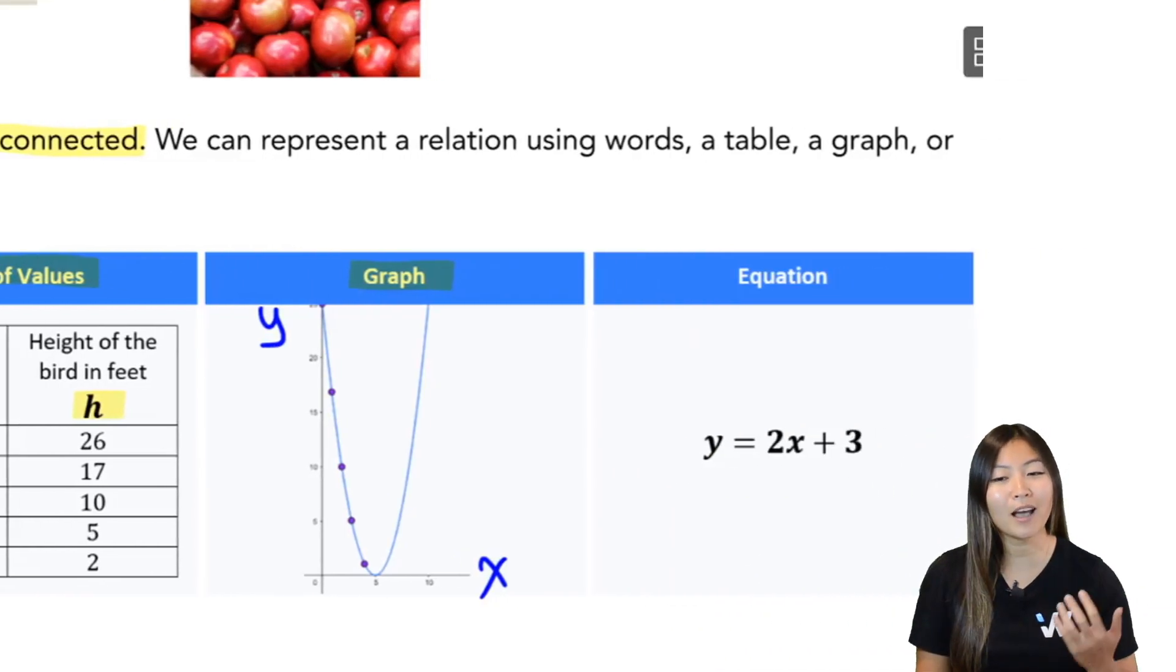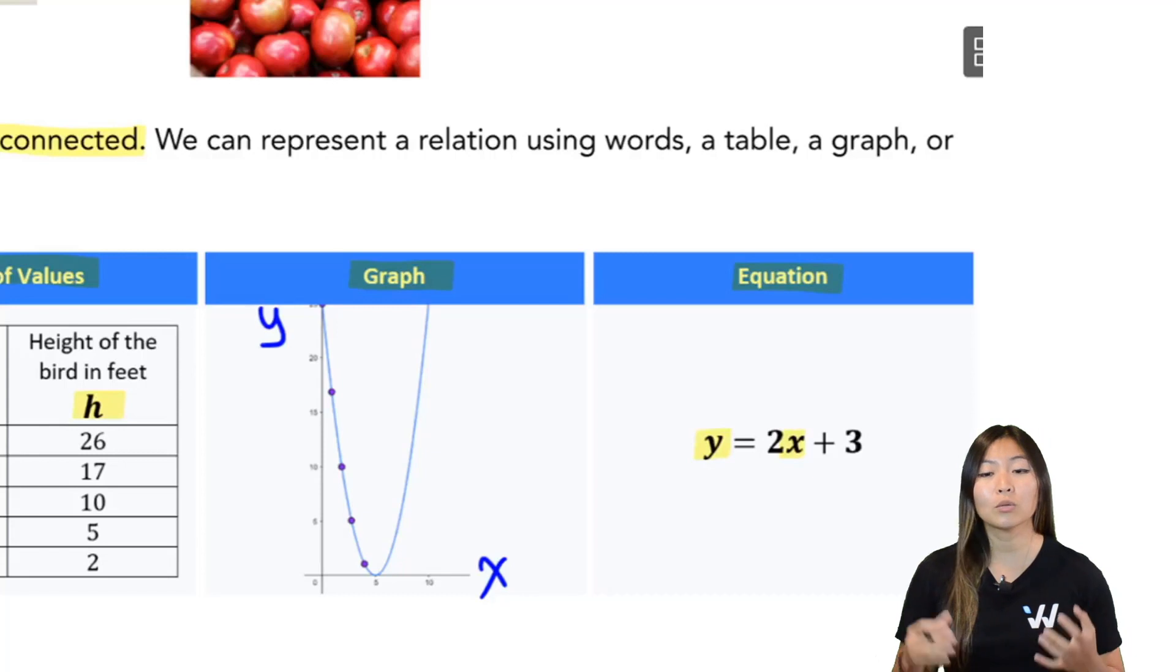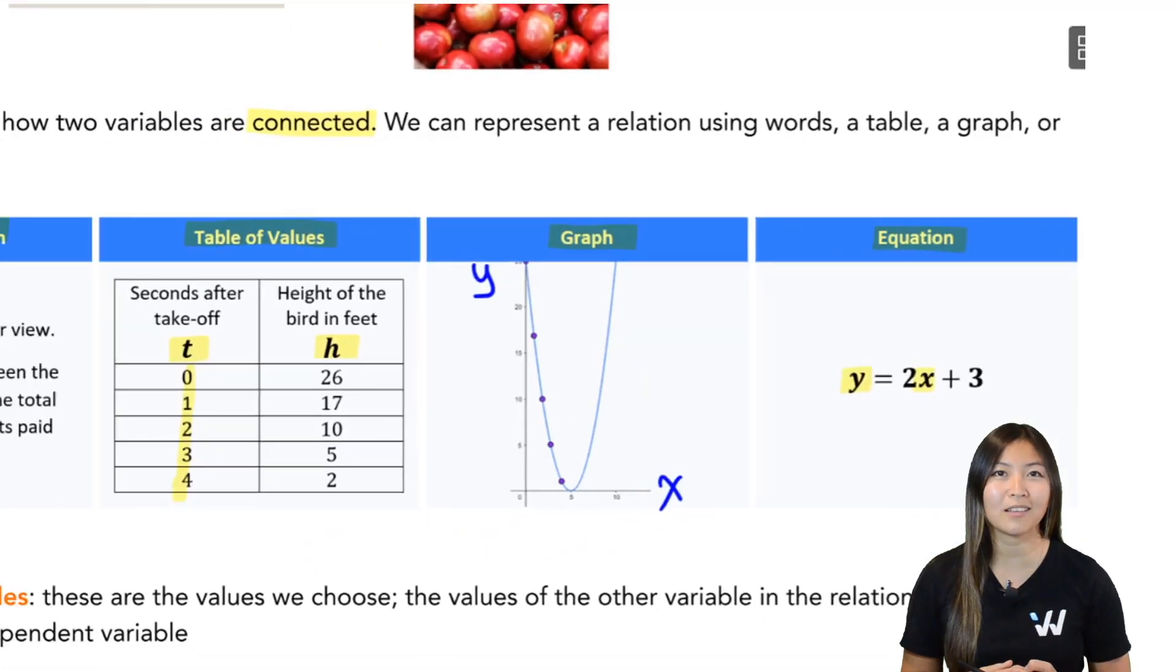And the last method is my favorite. It's to use an equation. Now it's my favorite because I'm lazy and I don't like to write out a lot of things. Equations is the simplest form. You see that you have both variables in the same equation. So that relationship is described using that equation.